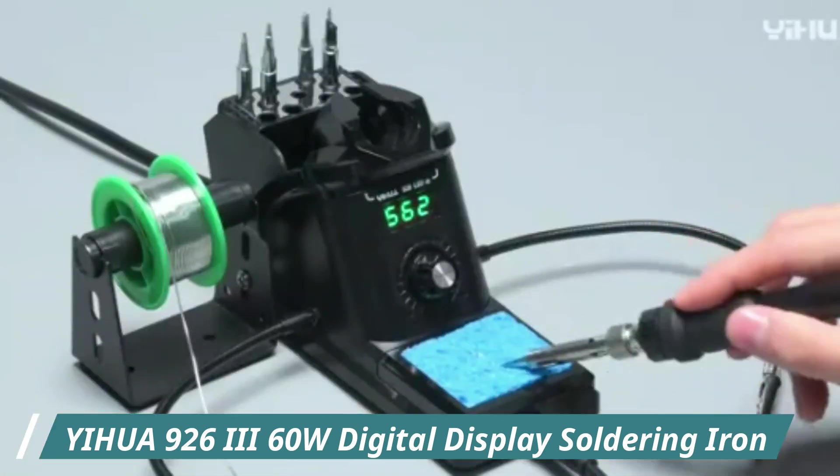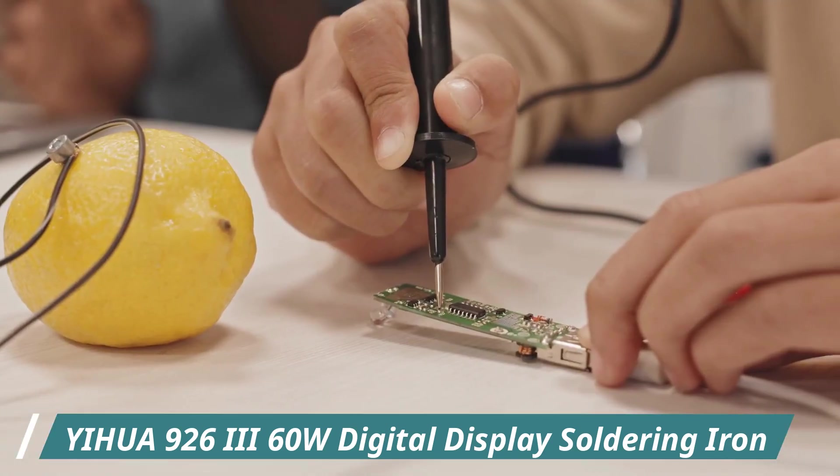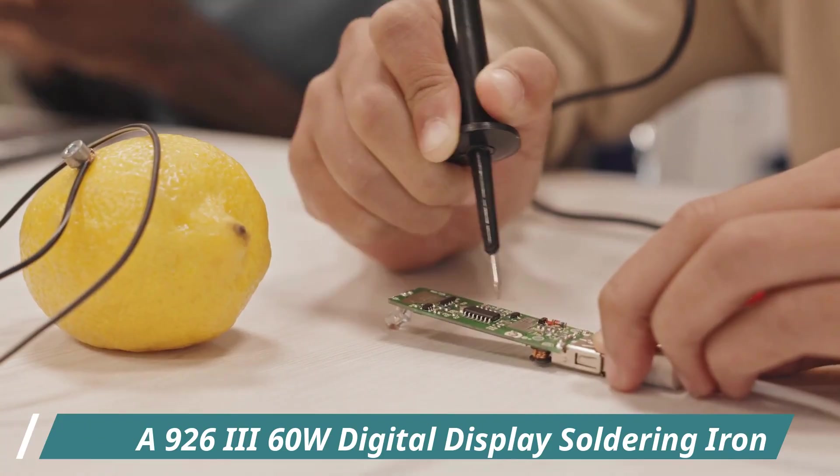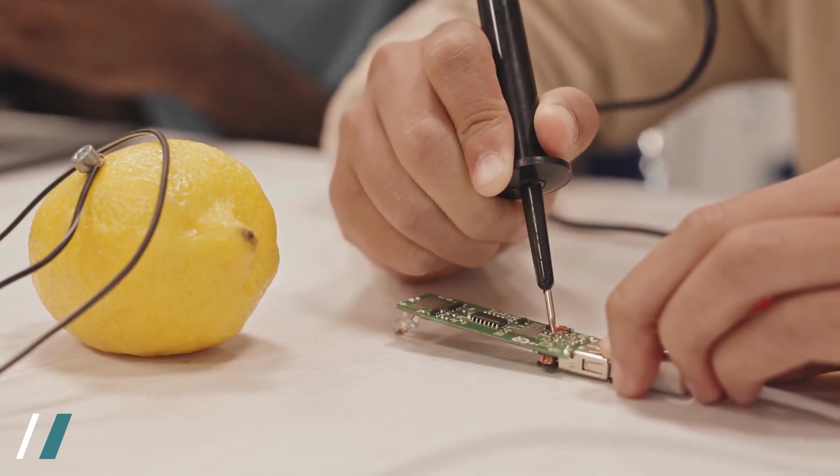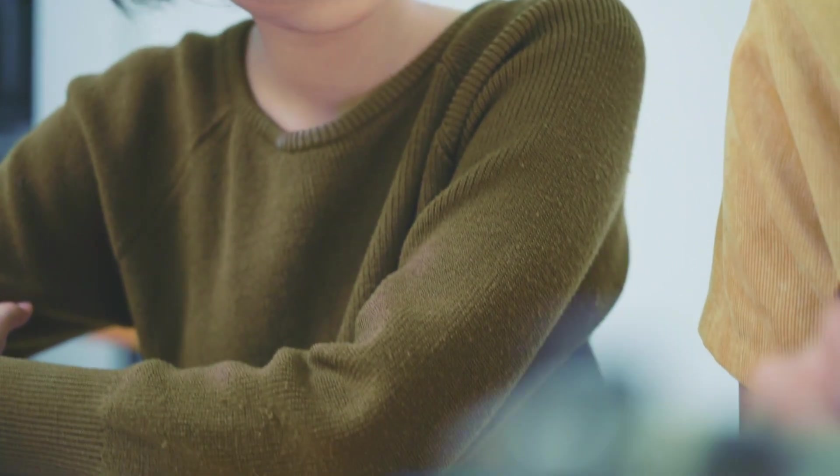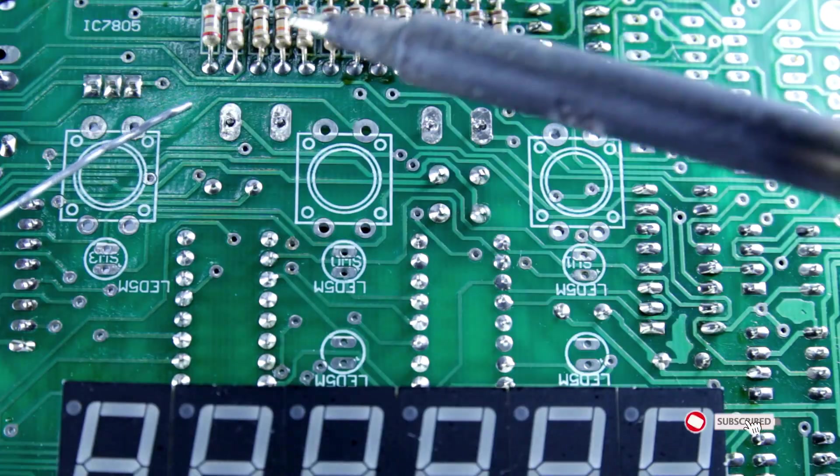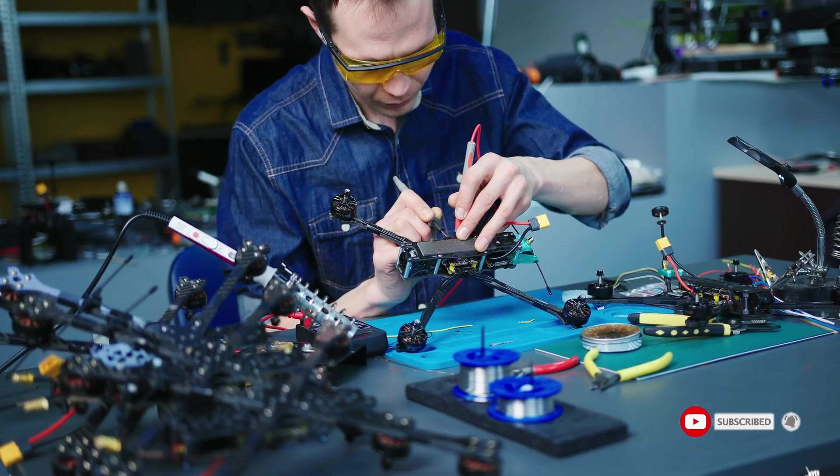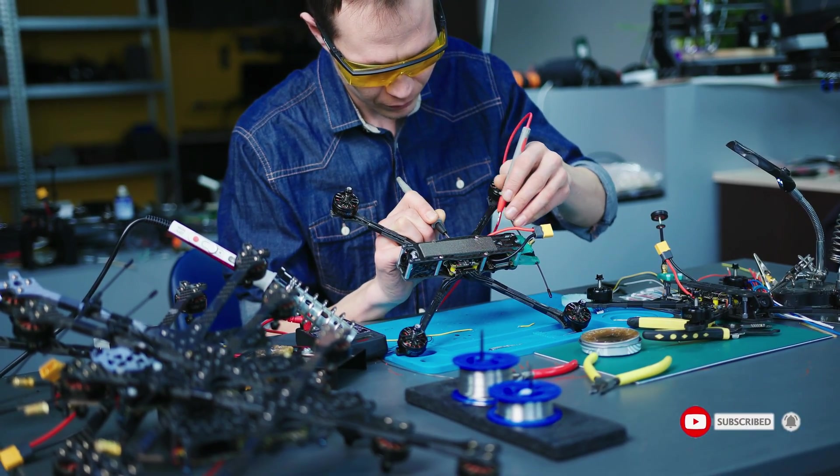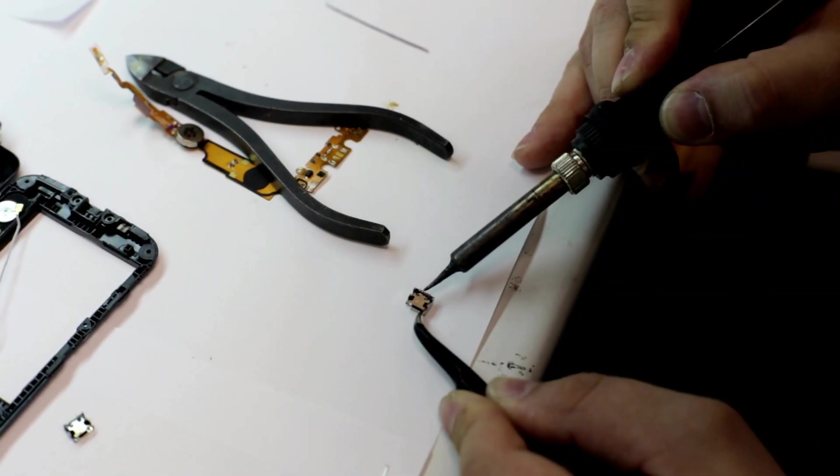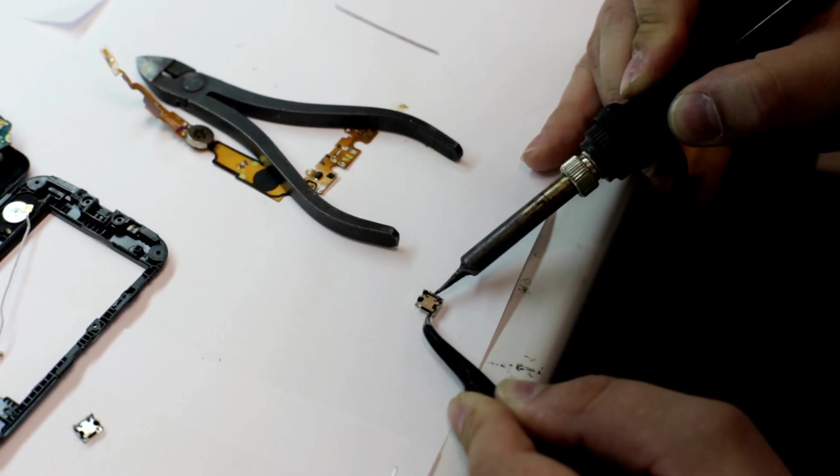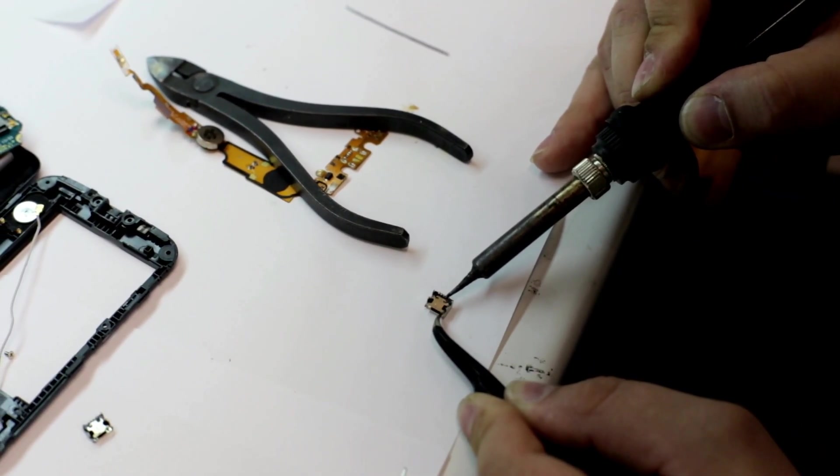The included helping hands are a huge plus, allowing you to stabilize your workpiece or hold wires in place. It makes solo soldering jobs significantly easier and more efficient. The fact that the Yihua 9263 offers calibration support is another feature that sets it apart from budget models.